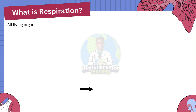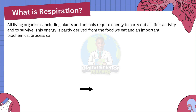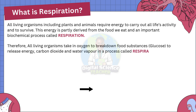Every living organism, including plants and animals, requires energy to carry out all life activities and also to survive. This energy is partly derived from the food we eat and an important biochemical process called respiration. Therefore, all living organisms take in oxygen to break down food substances, that is glucose, to release energy, carbon dioxide, and water vapor in a process called respiration.